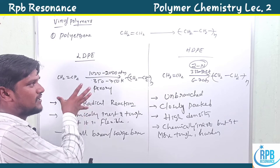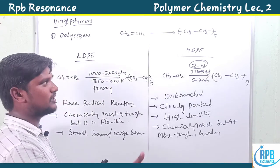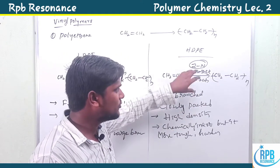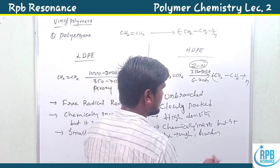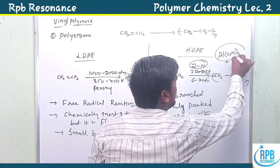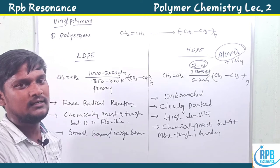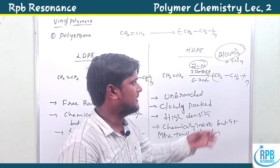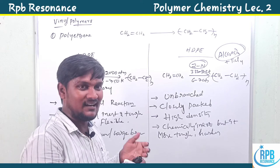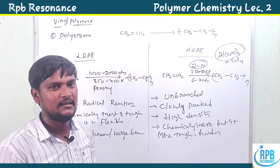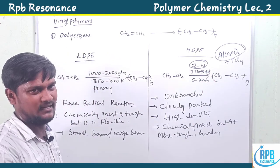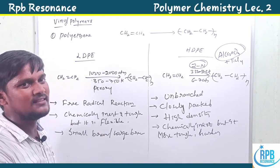In the case of high density polythene, we use Ziegler-Natta catalyst: Al(C₂H₅)₃ plus TiCl₄ — triethyl aluminium and titanium tetrachloride. This catalyst is called Ziegler-Natta catalyst, introduced by Ziegler and Natta, who were awarded the Nobel Prize in 1963 for the invention of this very useful catalyst.